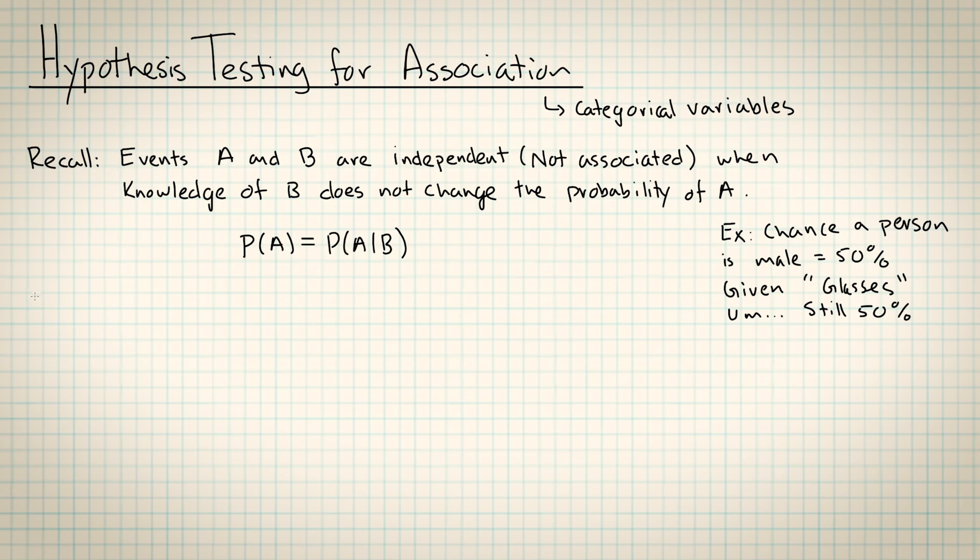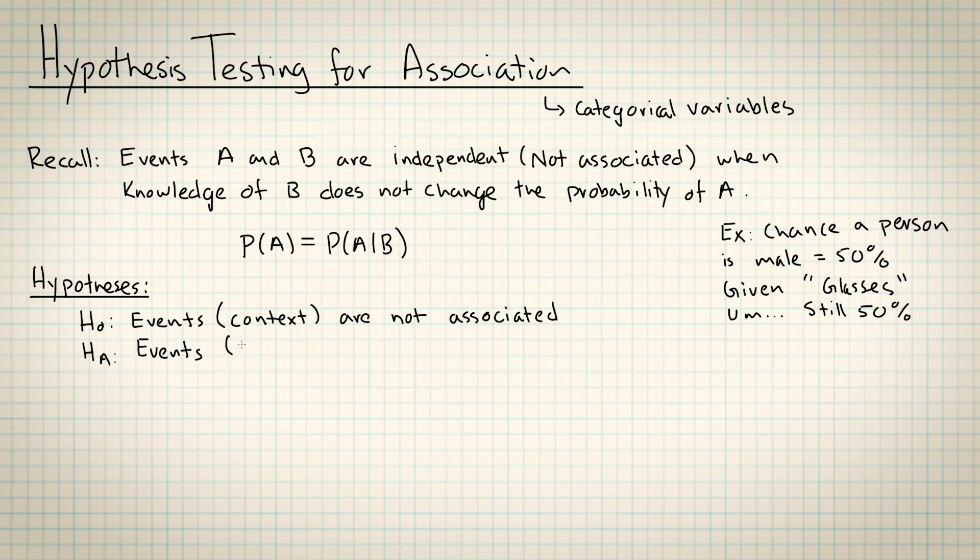It makes sense to me that if I know nothing about two variables, I am not going to assume that the two things have a relationship. For example, some people like to eat M&Ms and some people have red hair. Those are both categorical variables. But I'm not going to assume that red haired people like M&Ms more than other people do. If you just pick two variables, the benefit of the doubt goes to the fact that they are not associated.